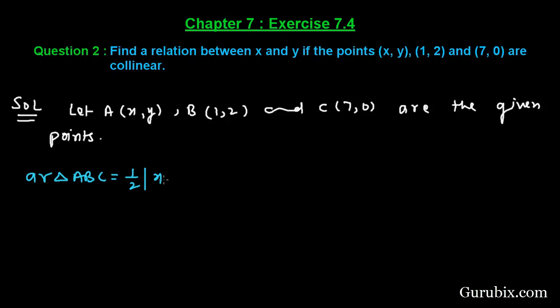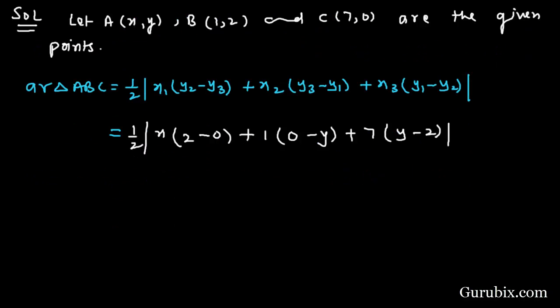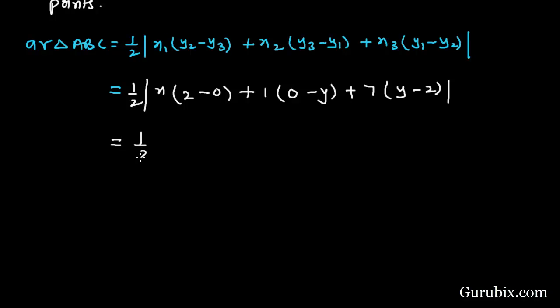So we shall write here area of triangle ABC and apply the formula: 1 over 2 mod x1(y2 minus y3) plus x2(y3 minus y1) plus x3(y1 minus y2). Here we have 1 over 2, x1 is x, y2 is 2, y3 is 0, x2 is 1, y3 is 0, y1 is y, x3 is 7, y1 is y, y2 is 2.